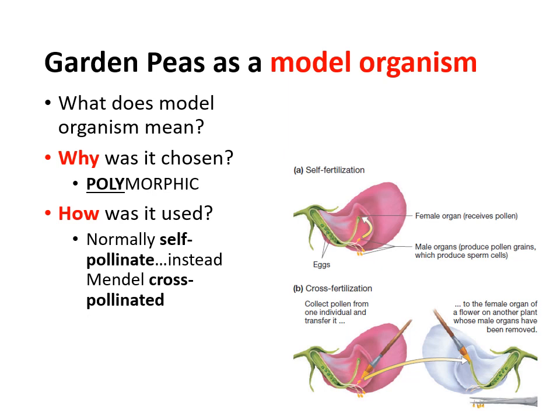How exactly was it used? Pea plants normally self-fertilize or self-pollinate — they have male organs and female organs, and the male organ produces pollen that fertilizes the female organ. Instead, what Mendel did was remove the male organ of the pea plant flowers he was working with, and used a brush to pollinate them with whatever pollen he wanted. So self-fertilization means the flower has both male and female parts and the male puts pollen to the female part. Cross-pollination means the male part has been removed and Mendel used a brush to put whichever pollen he wanted into that flower.